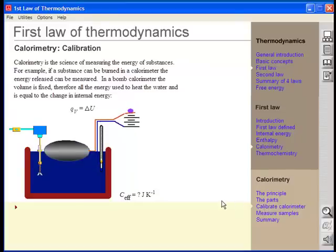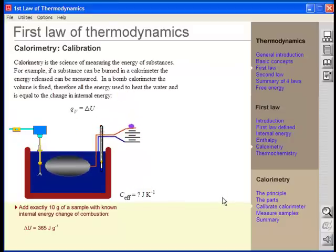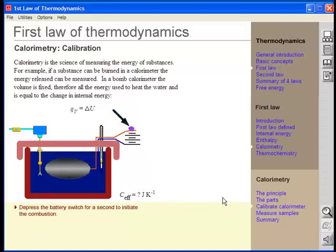First, to calibrate the equipment, we must know the effective heat capacity of the apparatus. To do this, a known weight of a sample with known heat of combustion is burned in the apparatus. The sample is placed in the apparatus and the combustion initiated with a heating coil.